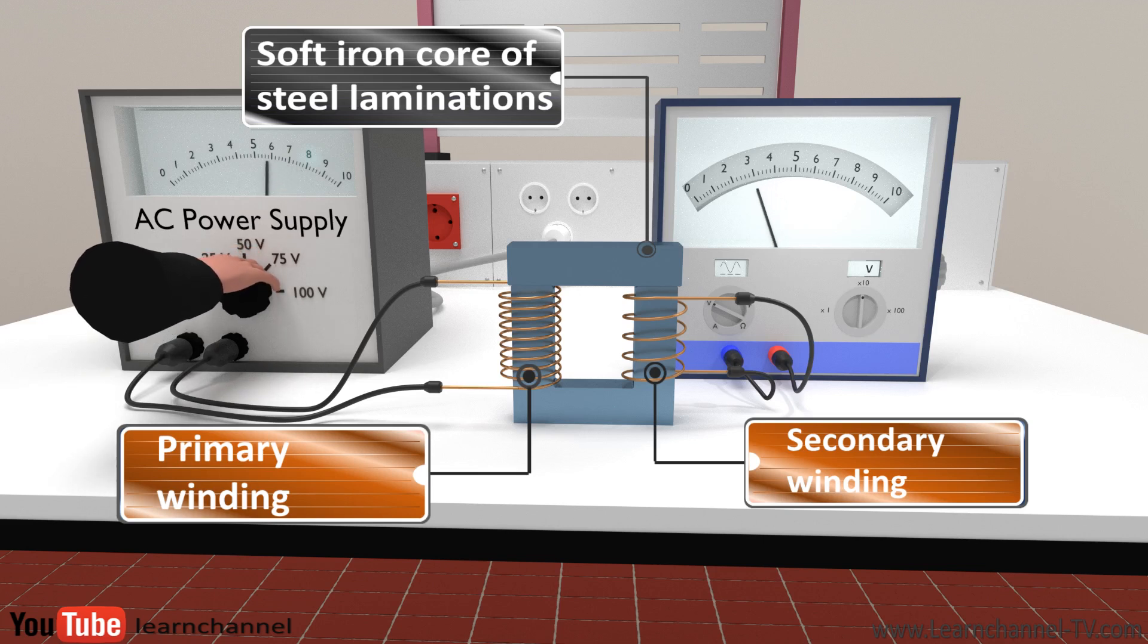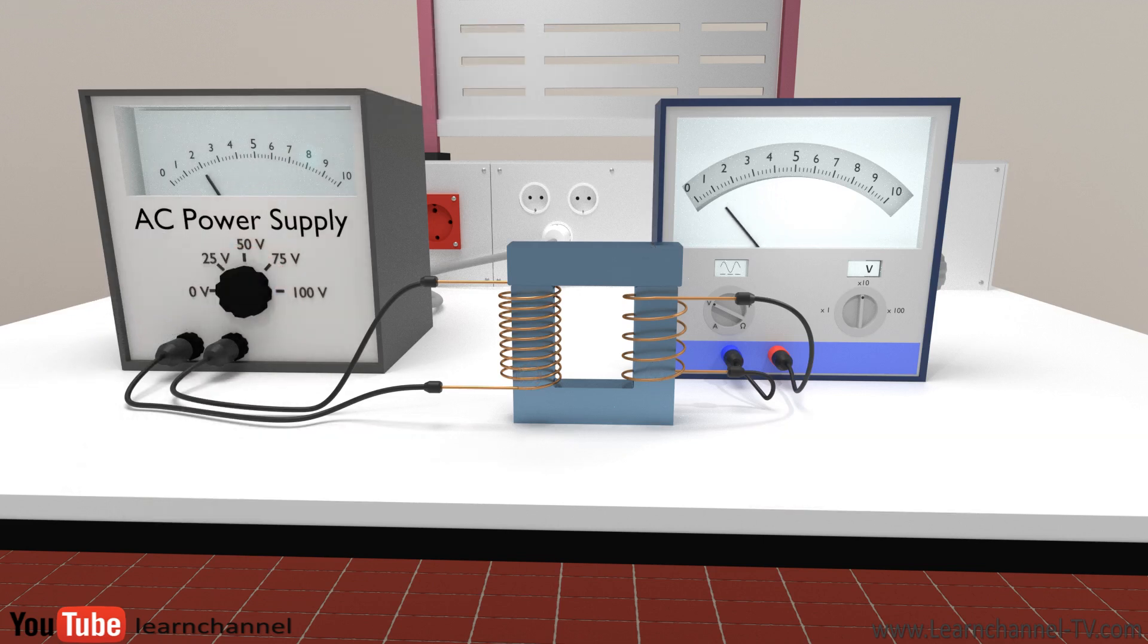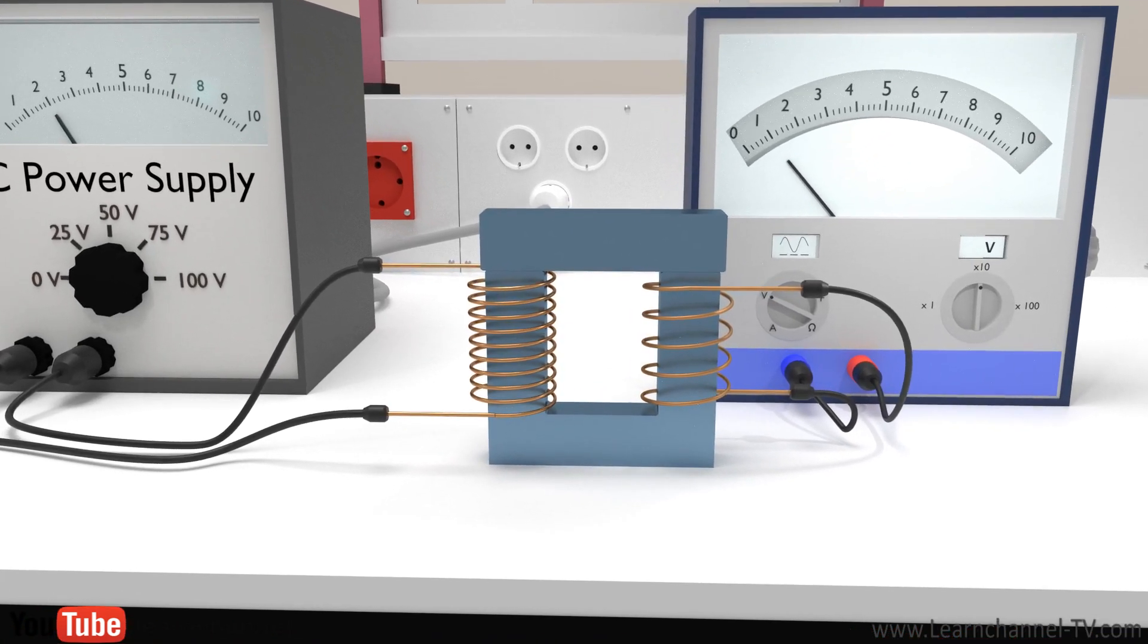What you see are an input and output winding. These two windings are electrically well insulated from each other, but electromagnetically coupled by a soft iron core. We will explain it later in detail.